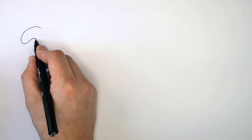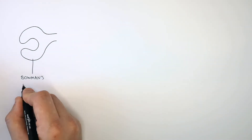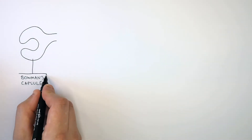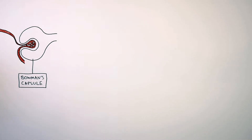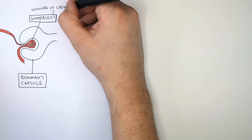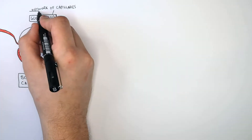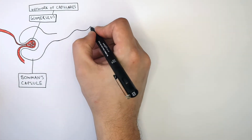The first part of the nephron we're going to talk about is the Bowman's capsule. Inside the Bowman's capsule, you're going to find a network of capillaries. These capillaries are the glomerulus, whereby the glomerulus is a network of capillaries that surround the Bowman's capsule.